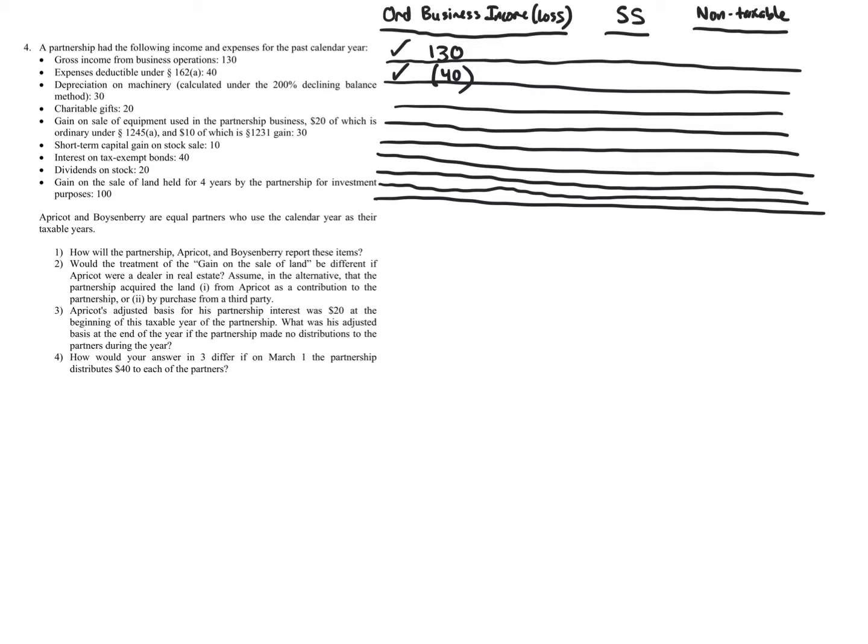We'll come back to depreciation. What about charitable gifts? Is there any possible way that a partner needs to know the specific amount of the charitable contribution? The answer is yes — because when ordinary business income gets lumped together as a total, you don't get the breakdown of each item.